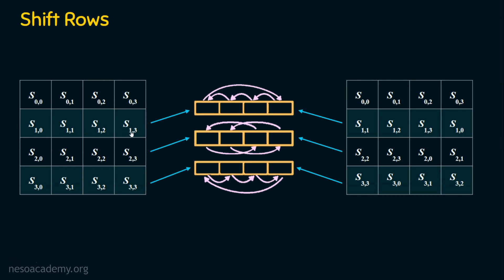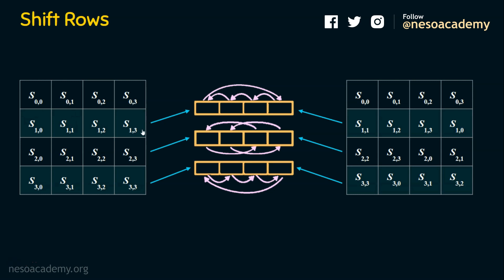The second row is shifted exactly one place. Before shifting we have S[1][0], S[1][1], S[1][2], and S[1][3]. After shifting: S[1][3] comes to the first position, S[1][2] comes next, S[1][1] comes next, and S[1][0] comes last. So the second row undergoes a one-byte left circular shift.